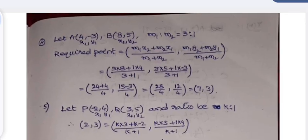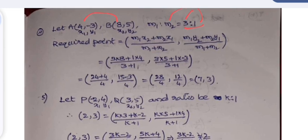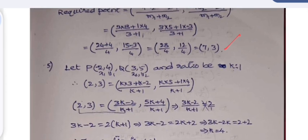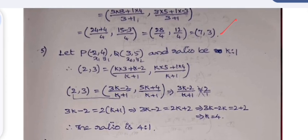The answers up to question 3 were explained in the question paper itself. For question 4, the ratio dividing the line segment is 3:1, so m₁ = 3 and m₂ = 1. Using the section formula: ((m₁x₂ + m₂x₁)/(m₁ + m₂), (m₁y₂ + m₂y₁)/(m₁ + m₂)), substituting the values, the point obtained is (7, 3).